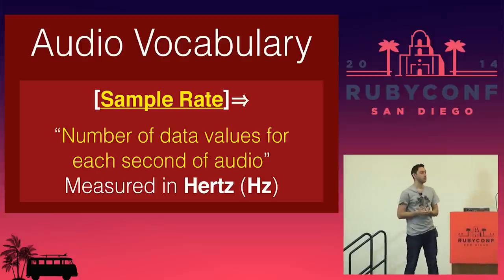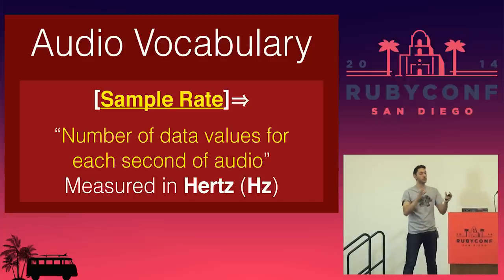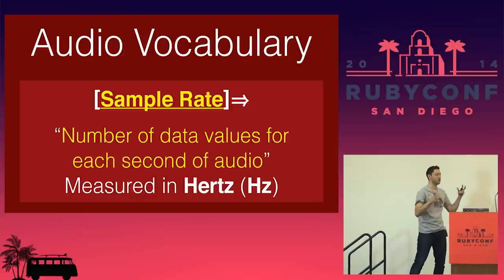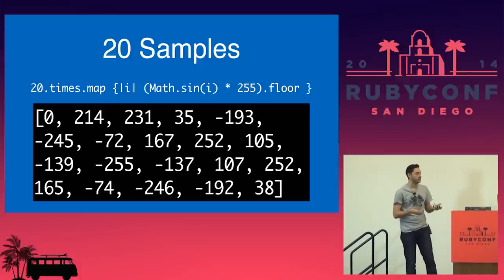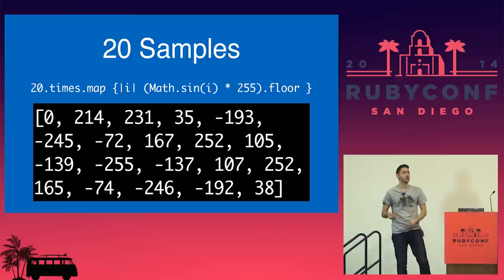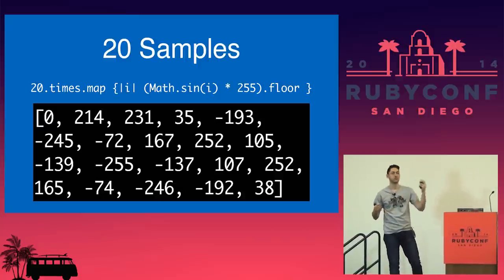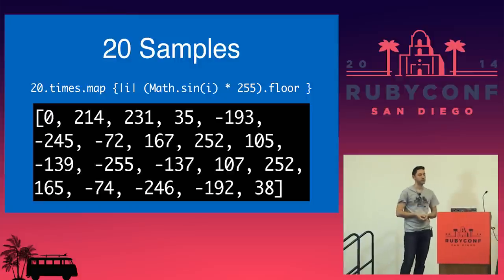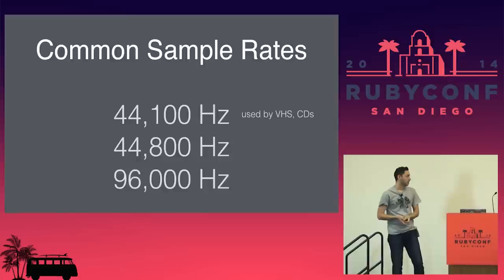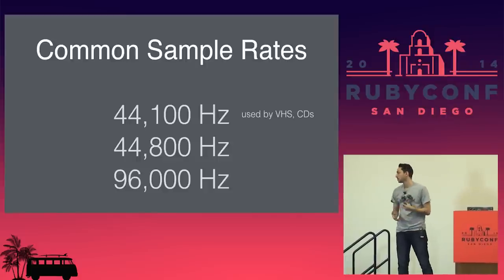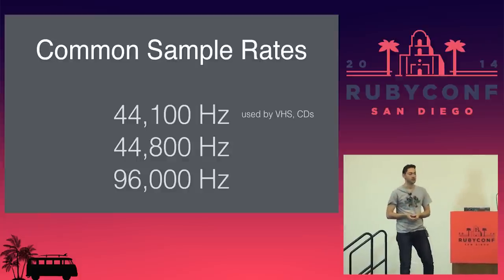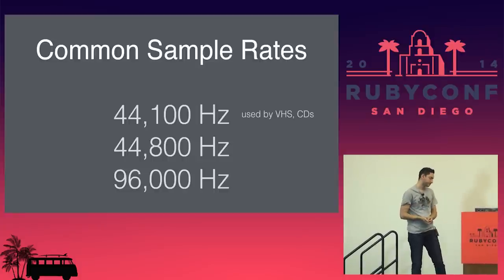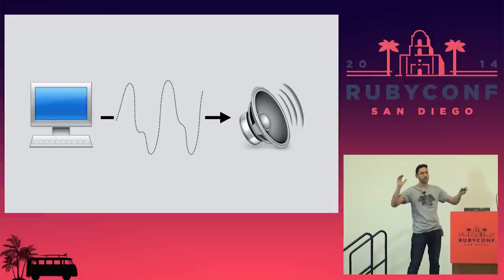That brings us to our very first vocabulary term: the sample rate. The sample rate is really just representing a bunch of numbers that we want to push at our speaker system for one given second of audio. If we had a sample rate of 20, that's 20 samples per second. Actual sample rates are much higher — we're looking at somewhere between 44,000 to almost 100,000 samples per second. Basically it just means there are more numbers.